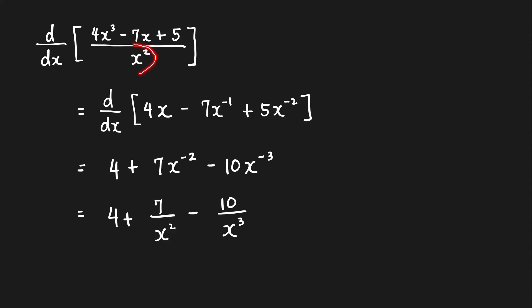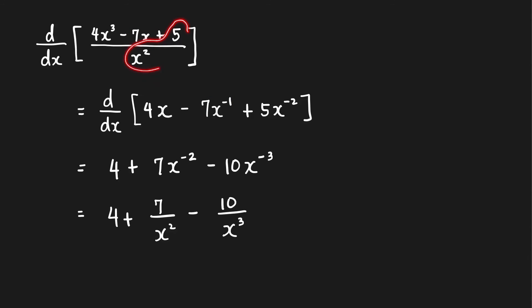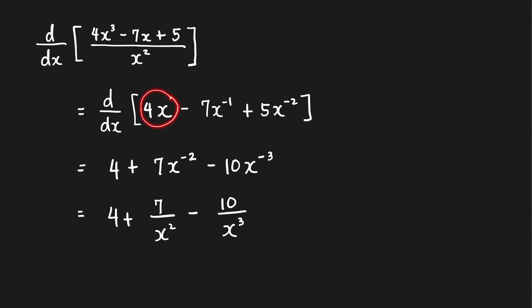Write 4x³/x² as 4x, minus 7x/x² as −7x^(−1), plus 5/x² as 5x^(−2). We can easily differentiate this. The derivative of 4x is 4. The derivative of −7x^(−1): bring down the power, giving −7 times −1, which is +7, and x raised to −2.